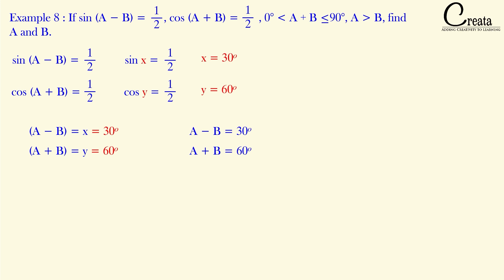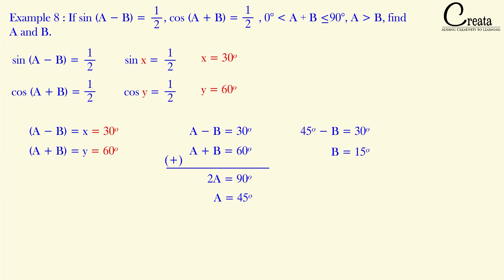We have two equations: A minus B equals 30 degrees and A plus B equals 60 degrees. Adding both equations, twice of A equals 90 degrees, so angle A equals 45 degrees. Putting angle A into one equation, we get B equal to 15 degrees. That is the answer to this question.